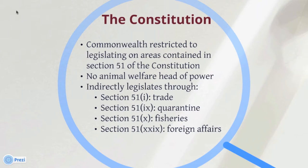In spite of this, the Commonwealth Government has been able to pass a number of laws that indirectly regulate aspects of animal welfare — principally under the trade and commerce, the quarantine, the fisheries and the foreign affairs heads of power. These and other heads of power have been used by the Commonwealth to legislate in respect of live animal export and animals processed at export registered slaughter establishments.